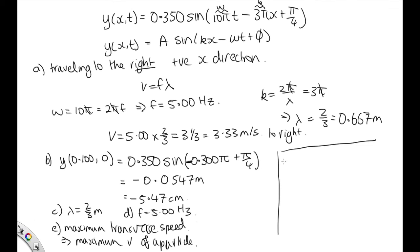To do that, the velocity of the particle is given by dy/dt. So we need to take the derivative of this with time. So to take the derivative, we take the derivative of what's inside the sine function with time, which is just the 10π. So we've got 10π times the amplitude 0.350. And the sine becomes a cos when we differentiate it. So that's times cos of 10πt minus 3πx plus π on 4.